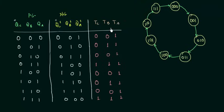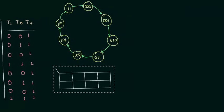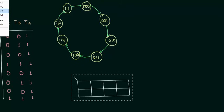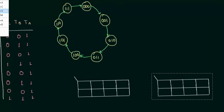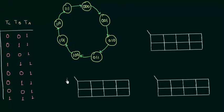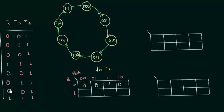Now we have TC, TB, and TA. We use an 8-cell K-map to find the minimized Boolean expressions for the three inputs. For TC, the values are 0, 0, 0, 0, 1, 0, 0, 1 — we have a pair of ones, and thus TC is equal to QB·QA.